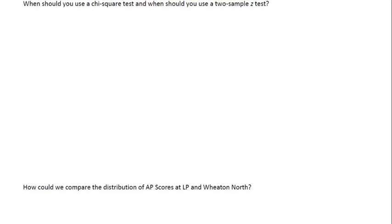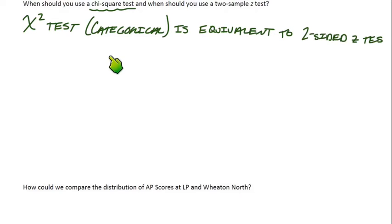The next part asks: when should you use a chi-squared test, and when should you use a two-sample z-test? Remember, a chi-squared test, which is categorical, is equivalent to a two-sided z-test, which is quantitative. By two-sided, we mean like the test we just did—the alternative hypothesis was not equal to. Just remember that in general, a chi-squared test is for categorical data, and a two-sided z-test, or a two-proportion z-test, is for quantitative data. In general, students typically find the chi-squared test to be easier.